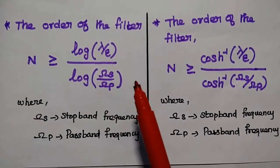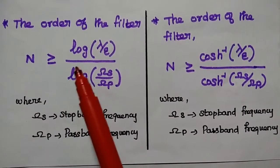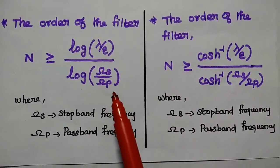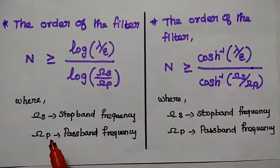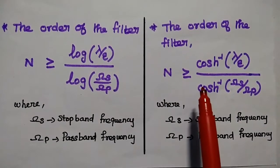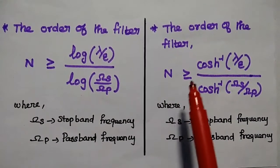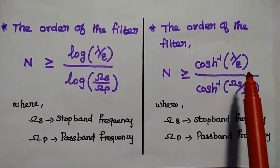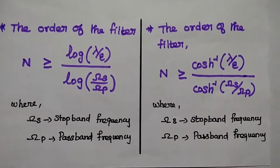The order of the Butterworth filter is obtained using the formula: N ≥ log(λ/ε) / log(ω_s/ω_p), where ω_s is the stopband frequency and ω_p is the passband frequency. In the Chebyshev filter, the order is obtained using: N ≥ cosh⁻¹(λ/ε) / cosh⁻¹(ω_s/ω_p).